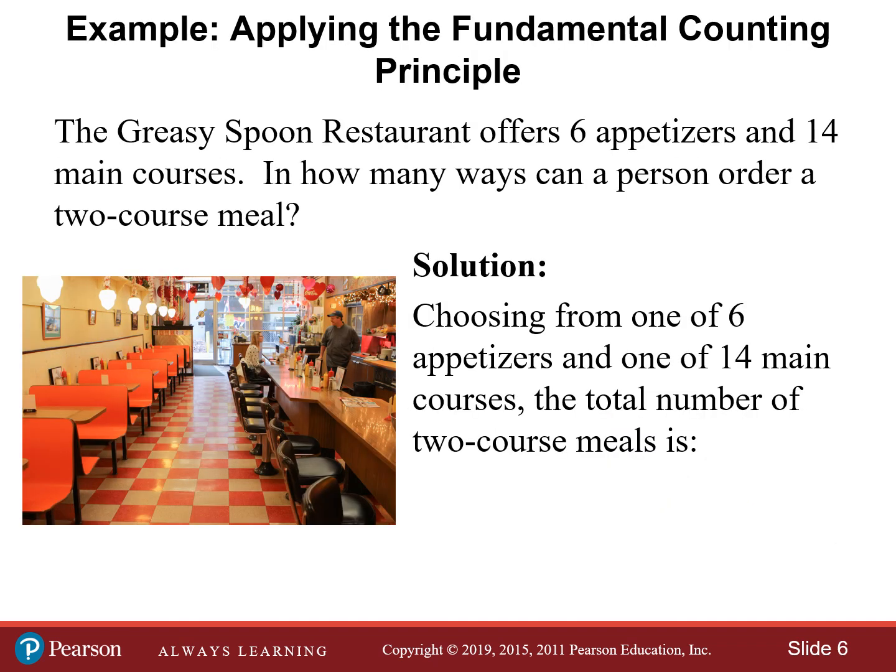Here's another example. Let's say a restaurant called Greasy Spoon offers six appetizers and 14 different main courses. How many ways can a person order a two-course meal? Choosing one of the six appetizers and one of the 14 main courses and using the fundamental counting principle, we simply multiply six times 14, which is 84. So there are 84 different ways that you can order a two-course meal at this restaurant.